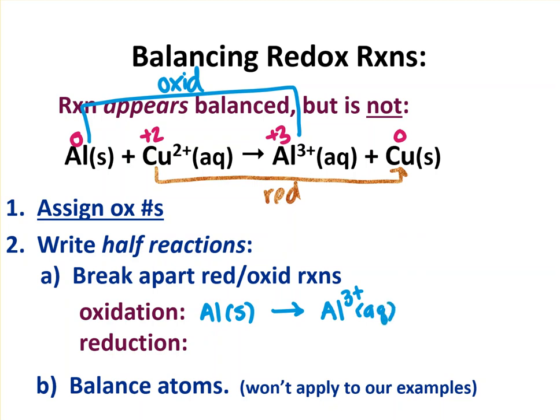And then for my reduction, Cu2+(aq) goes to Cu(s). The next step would be to balance the atoms. And that would be like if I had more copper on one side than the other, this is already balanced. And so is the aluminum. There's one aluminum on each side. So this step we're not going to use on our examples.